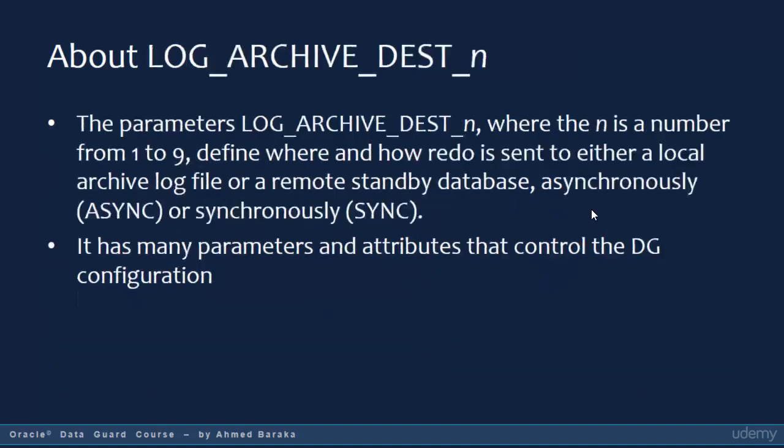LOG_ARCHIVE_DEST is the parameter that you use in the primary database to give it information about how to connect with the standby database. You also define the configuration of your Data Guard all in this single parameter. That's why this parameter is the most important parameter in any Data Guard configuration. It tells the primary database to which standby database it should connect, and it holds all the attributes and configurations of your Data Guard environment. You can configure up to nine log archive destinations, which means a primary database could have up to nine standby databases.